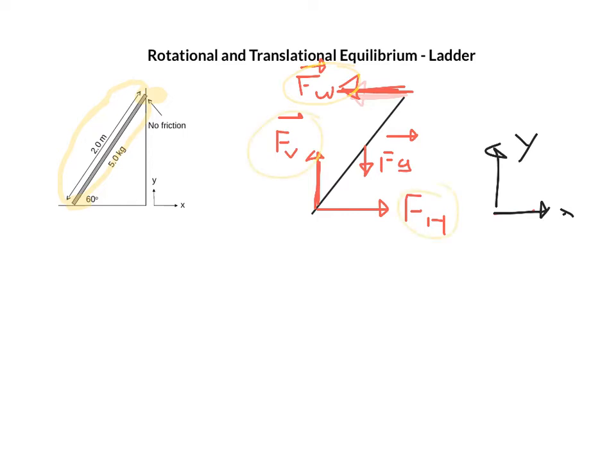So the pivot point I can actually choose whatever point I want but if I put it where I have the most unknowns I hopefully get the most easiest equations. I'm gonna choose my pivot down here.